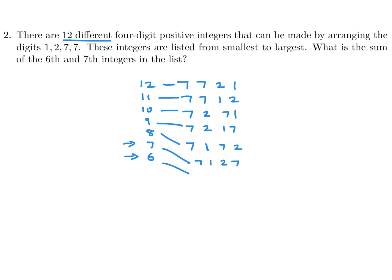And the seventh one would therefore be 7, 1, 2, 7. Now I've exhausted the 7 for the first digit, so I move down to 2, giving 2, 7, 7, 1. So carefully ranking them, this would be the ranking. They want the sixth and the seventh — the sum of those two: 7127 plus 2771 is 9898.